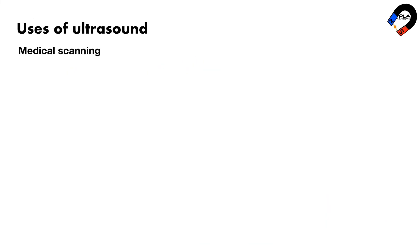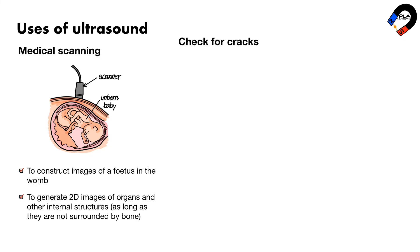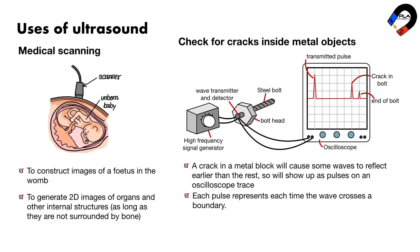Medical scanning of soft tissue. To construct images of a fetus in the womb. To generate 2D images of organs and other internal structures, as long as they are not surrounded by bone. Check for cracks inside metal objects. A crack in a metal block will cause some waves to reflect earlier than the rest, so will show up as pulses on an oscilloscope trace. Each pulse represents each time the wave crosses a boundary. The speed of the waves is constant, so measuring the time between emission and detection can allow the distance from the source to be calculated.